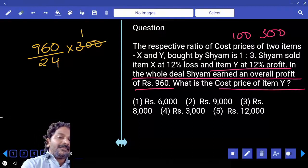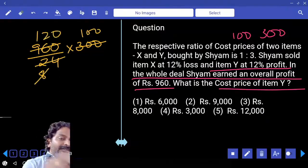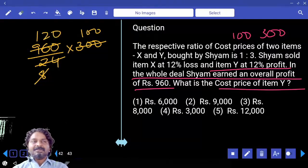300 times 3, 8 times... 120 times 100 equals 12,000. Fifth option.